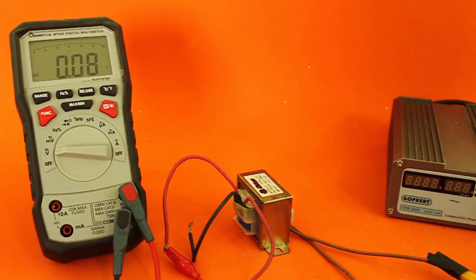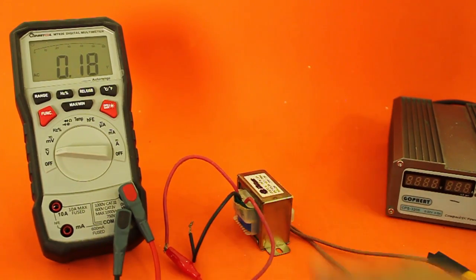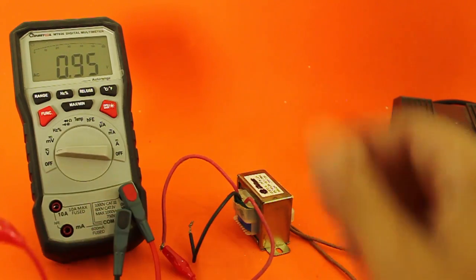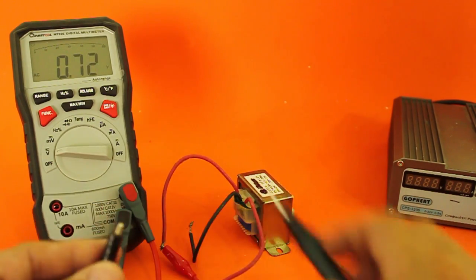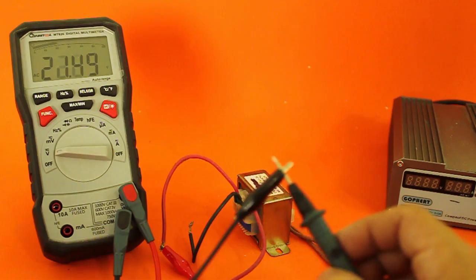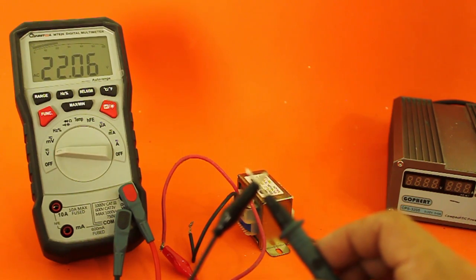You can also use alternating current. Here I have this transformer. And let's measure the value of voltage of the transformer output.